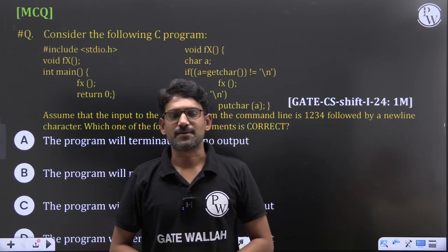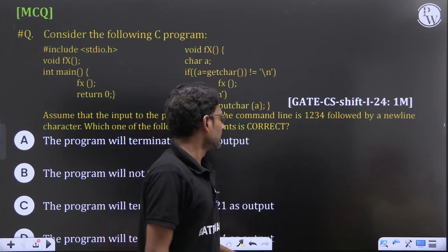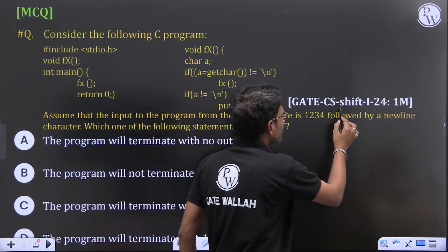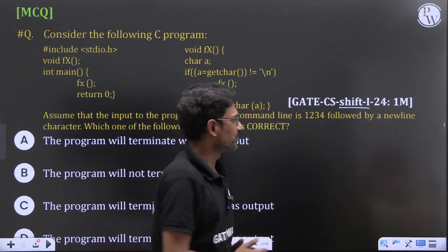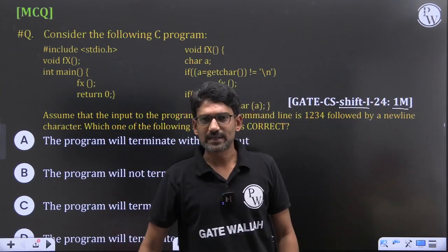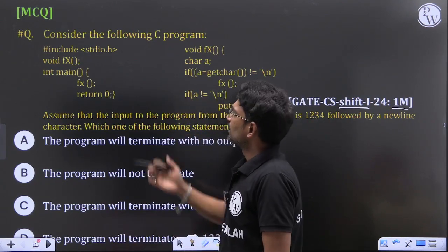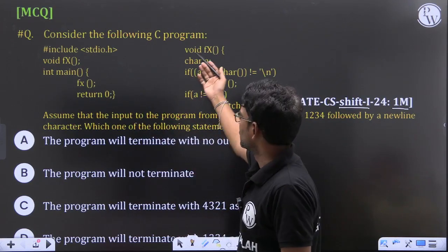Hello dear students, we have got this question in the GATE 2024 shift one Computer Science and Information Technology paper for one mark. The question is: consider the following C program. We are given the program with FX and main function.